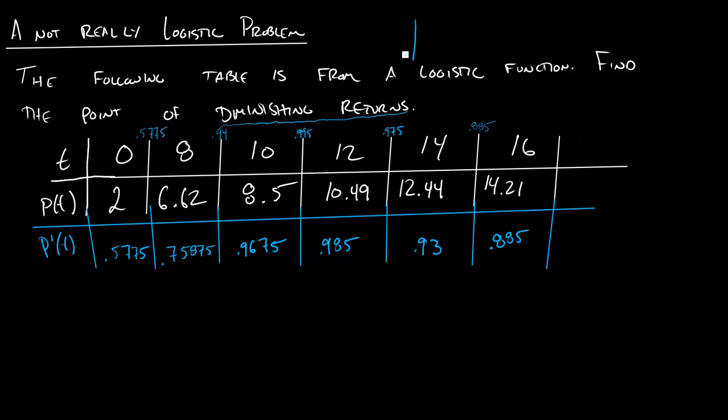So remember our function, our logistic function, kind of looks something like this. And so at the beginning, the derivative is going to be positive, but not that great. Here the derivative will be positive, but not that great. But the point where the derivative is the greatest is going to be right in the center here, right?